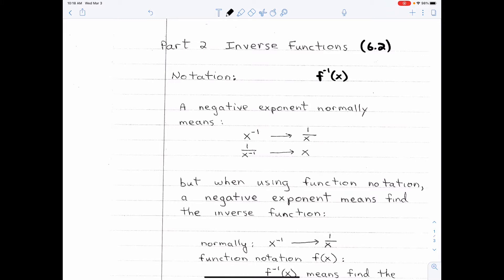So normally, a negative exponent would mean move something from the numerator into the denominator or move something from the denominator into the numerator. That's not what a negative exponent means when you're using function notation. And I wanna emphasize this. It's function notation.